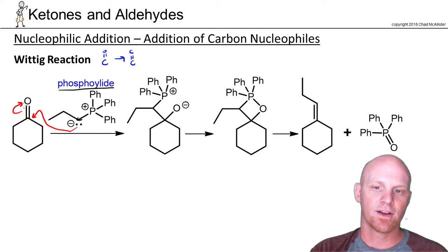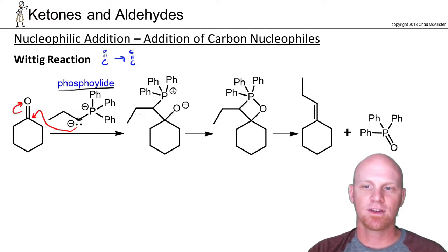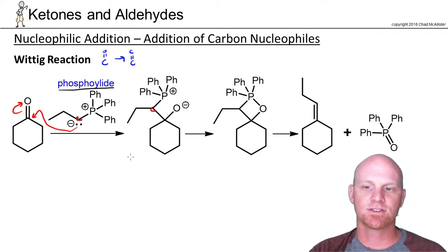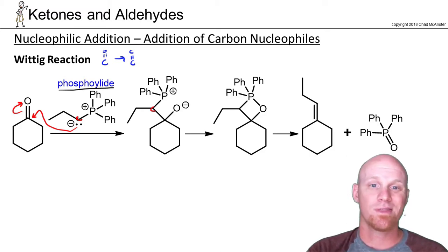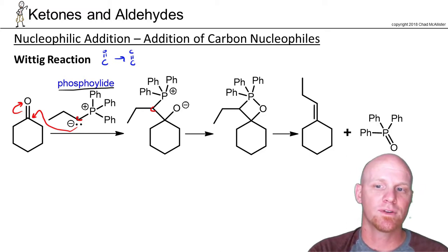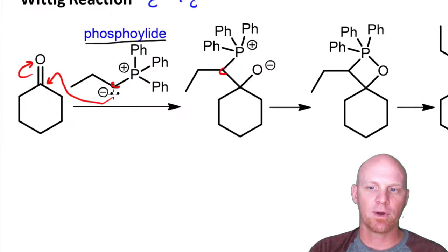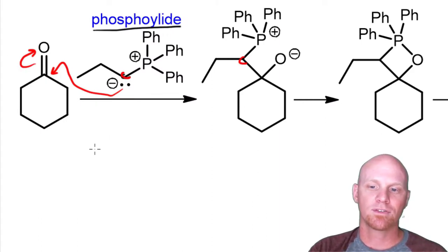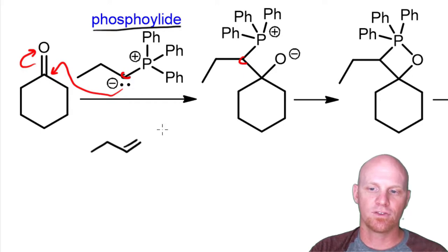The phospho-ylide is going to come in and do nucleophilic attack, kicking the pi electrons up to the carbonyl. That gives us this intermediate structure. This carbon here is now attached to what used to be the carbonyl carbon. I've drawn the phospho-ylide with a negative charge on carbon — that's easy to recognize as a great nucleophile. Sometimes people will show the other resonance contributor.